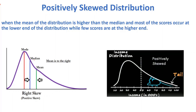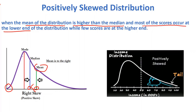A positively skewed distribution tells us that the mean of the distribution is higher than the median. Here you can see that the mean is greater than the median. It also tells us that most of the scores occur at the lower end, while at the higher end we have very few scores.